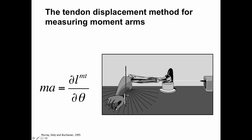If you attach a cable to the proximal part of the muscle and route it through its origin and attach that to a position transducer, what you've done is taken the muscle and enabled yourself to measure how much it changes length as you move the elbow through a range of motion. As you move the elbow and measure through your position transducer how much your muscle changes length, you can use that to calculate moment arm at many points.